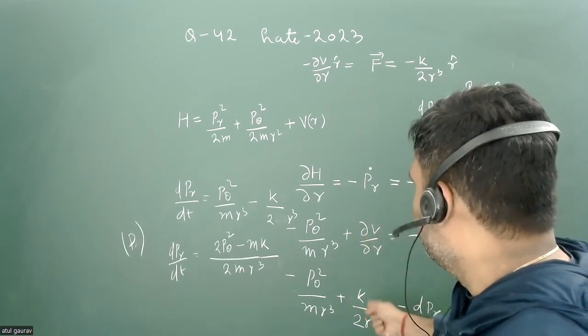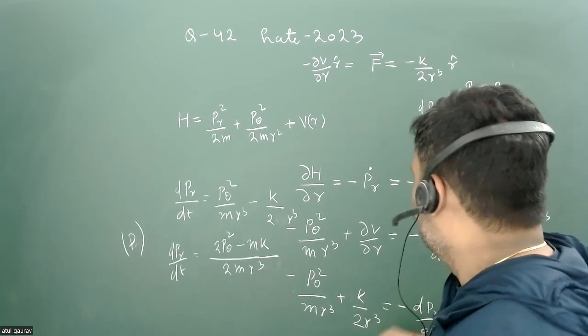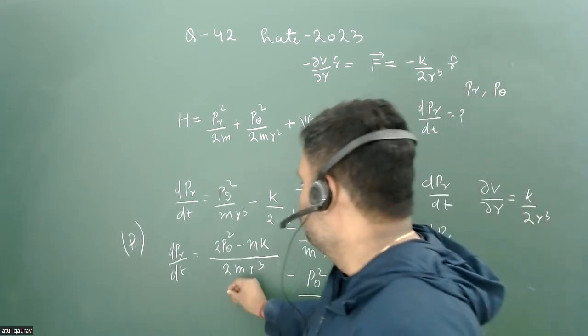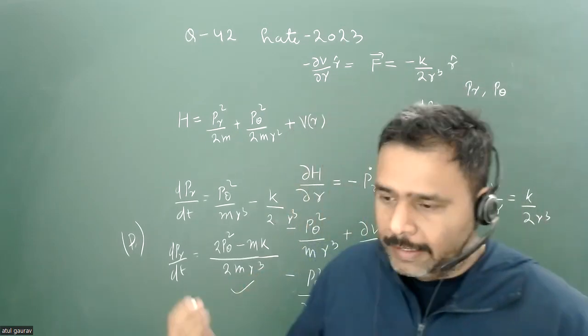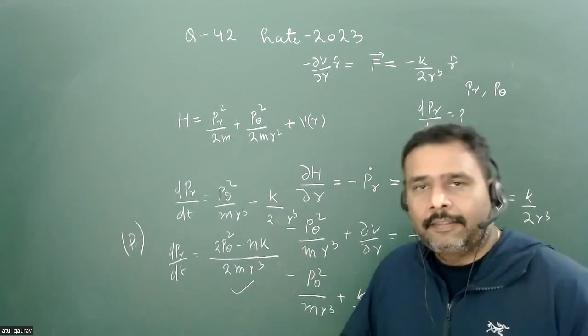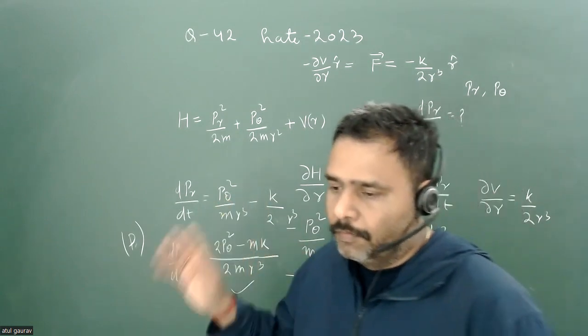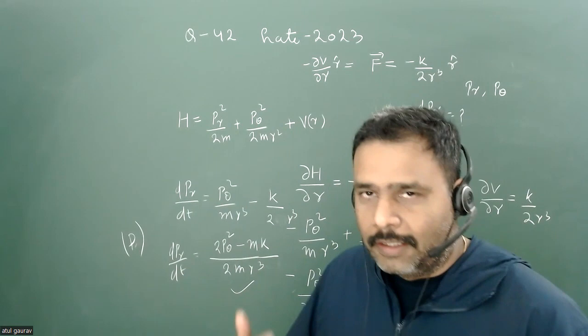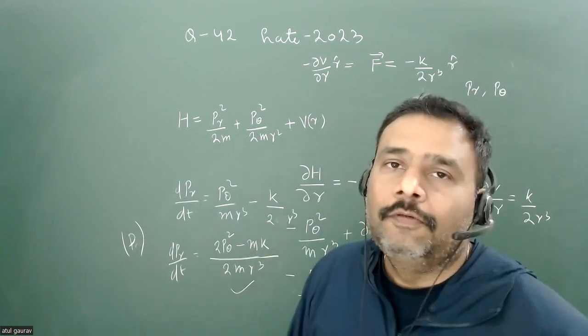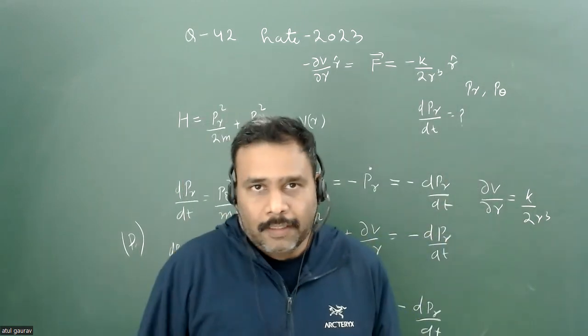We just write del V/del r as k/2r³, so this will be your answer. If you have any suggestions or corrections, please let me know because it's much better that you can also give your feedback. Thank you.